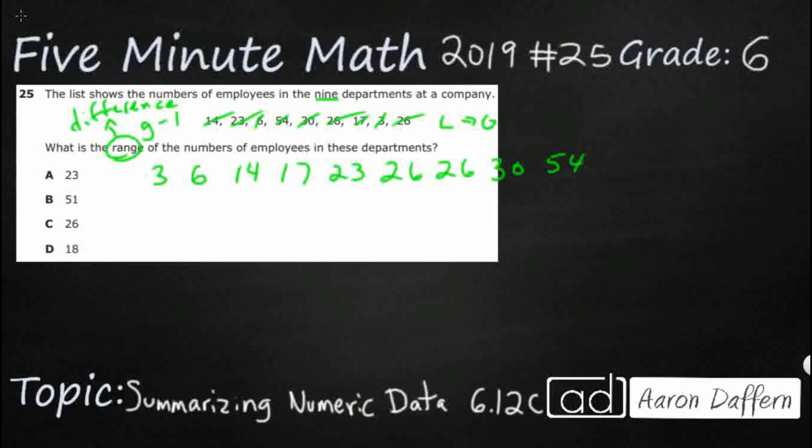And so, we're simply going to take our greatest, our 54, we're going to take our least 3, we're going to subtract the 2, and we're going to get 54 minus 3, that's going to give us our 51, and that's going to be our answer.